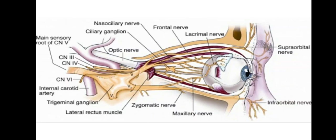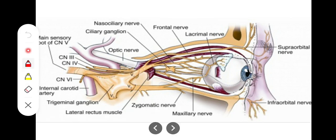In our previous video we talked about the blood vessels of the orbit, and now we'll have a look at the nerves of the orbit. There are 6 nerves which basically supply the eye and orbit. The first one is the optic nerve, which is formed by the axons of the ganglionic cells in the retina — it is essentially the nerve of sight, responsible for forming our vision and bringing signals to the brain.